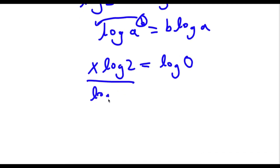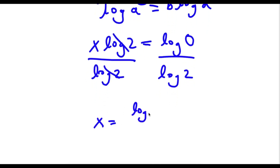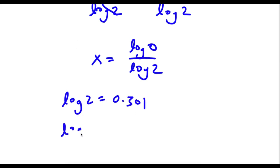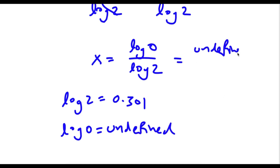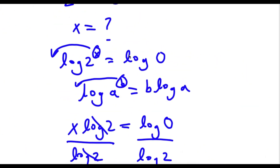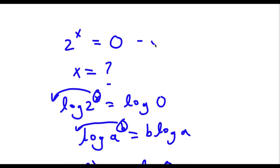Now I can go ahead and divide both sides by log 2 because I want to isolate x. So these two cancel out and I'm left with x is equal to log 0 over log 2. Now log 2 is equal to 0.301, and log 0 is actually undefined. So now I have undefined over 0.301, and this means that our answer is undefined. Meaning 2 to the power of x equals 0 is undefined.